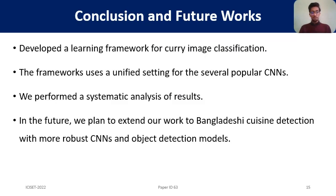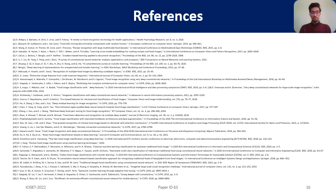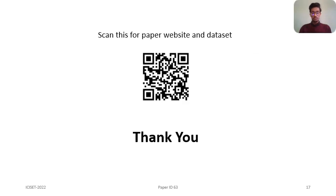To conclude, in this paper we developed a transfer learning framework for curry image classification using a unified setting across several popular CNNs, and performed a systematic analysis of the results. In the future, we plan to extend our work to Bangladeshi cuisine detection with more robust CNNs and object detection models. Here are the references. Please scan the QR code for more details. Thank you for your attention.